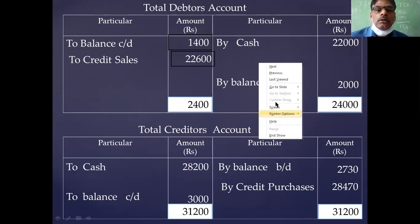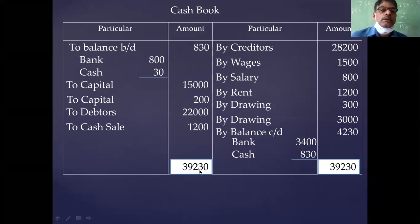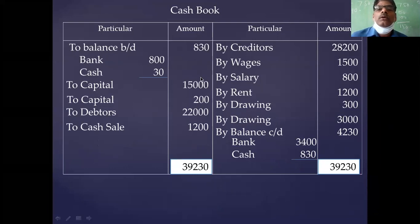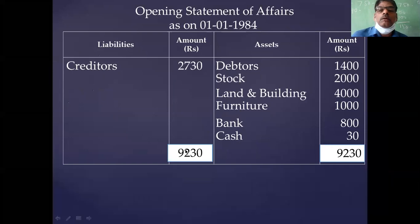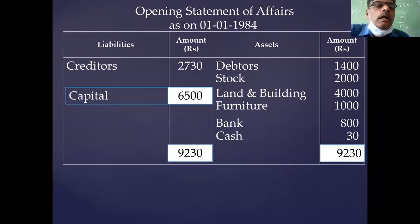Now close the cash book. Cash book total debit side is 39,230. Both sides total is the same — they tally. If the account tallies, there is no problem. Close the statement of affairs: total assets is 9,230. Difference is 6,500 — this is called capital. Opening capital is 6,500. The missing information is now collected.